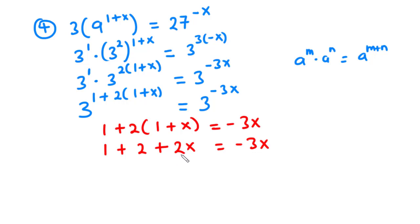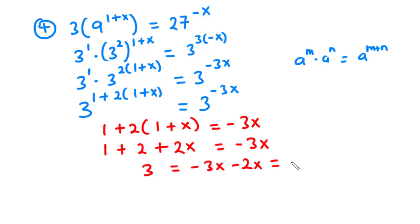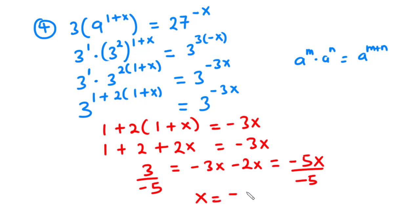Now let's transpose 2x to the right hand side. So we are going to have 1 plus 2 is 3, and that is equal to negative 3x minus 2x, which is equal to negative 5x. So we divide both sides of the equation by negative 5, and then we have x to be equal to negative 3 over 5.